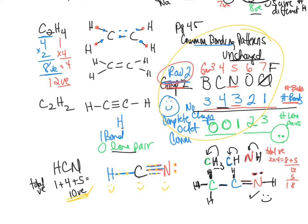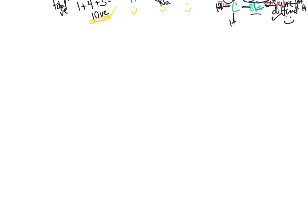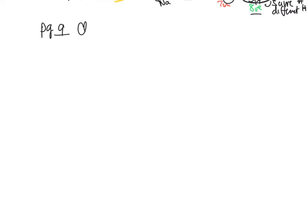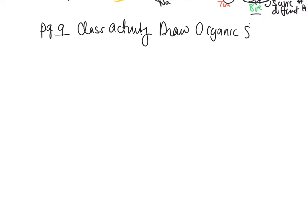We will now go on to working the POGIL activity — because if we were in class, this is what we would be doing. Go to page 9 and we'll work the class activity on drawing organic structures. You see the first model — you have your molecular formula, which is C3H7Br, and then the Lewis structure.